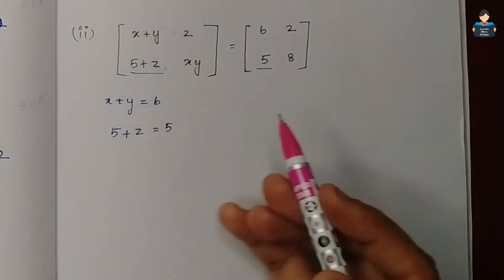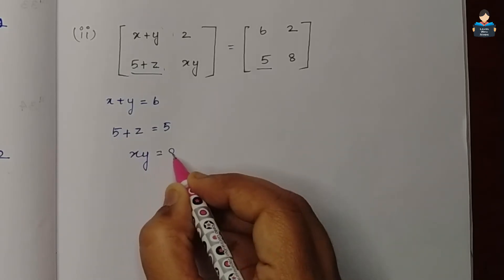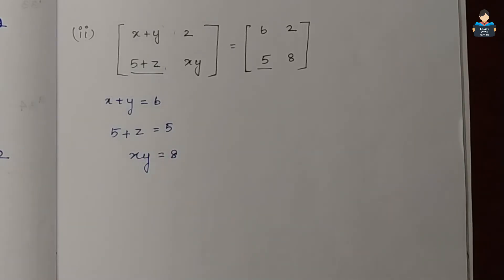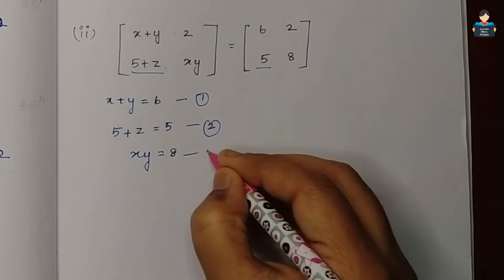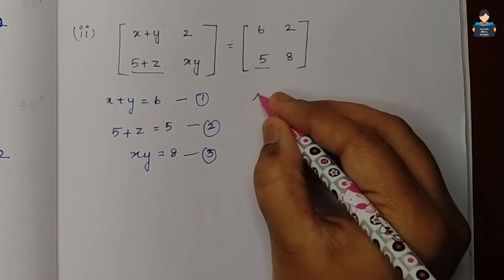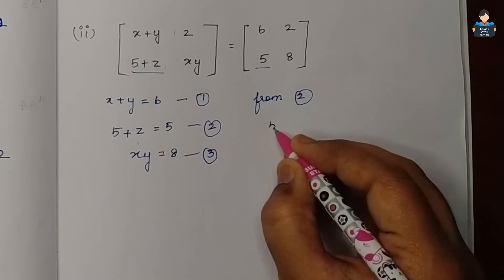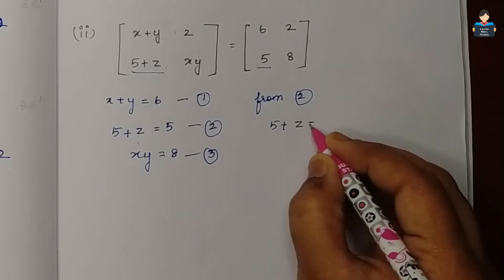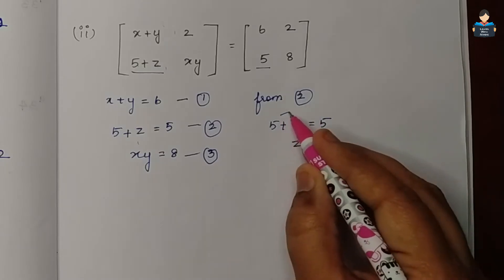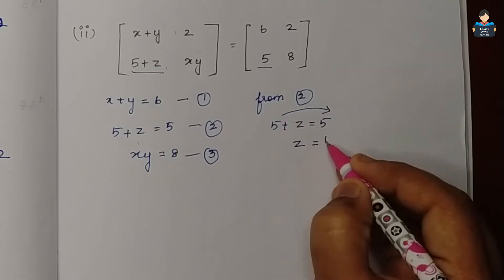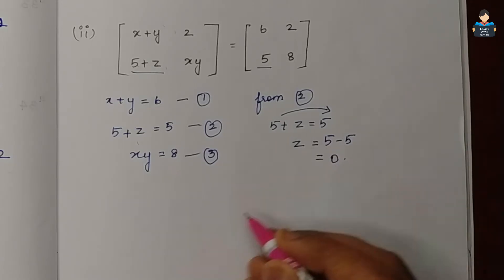At position a22 we get xy is equal to 8. So we have equation 1: x plus y = 6, equation 2: 5 plus z = 5, and equation 3: xy = 8. From equation 2, solving for z: 5 plus z equals 5, so z equals 5 minus 5, which gives z equal to 0.